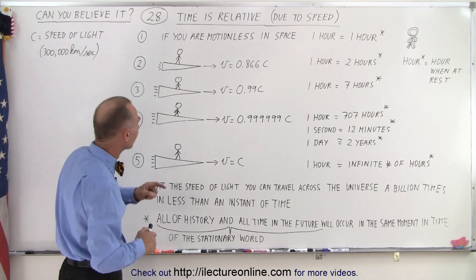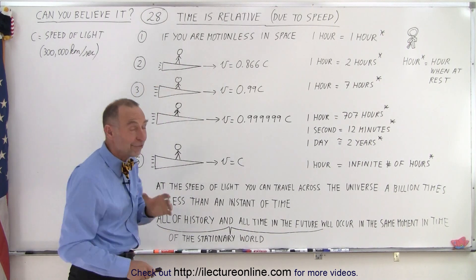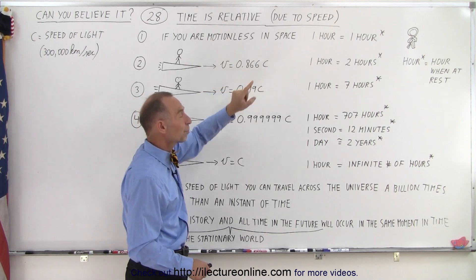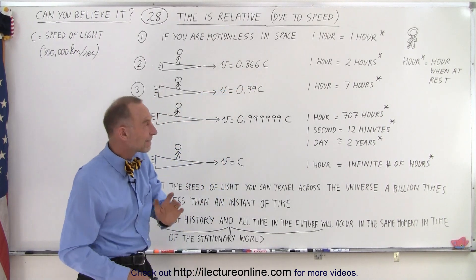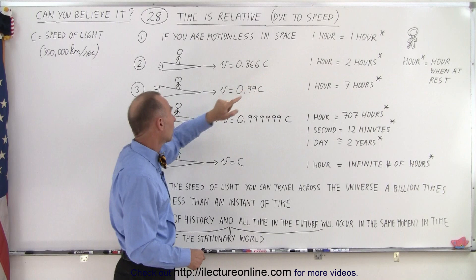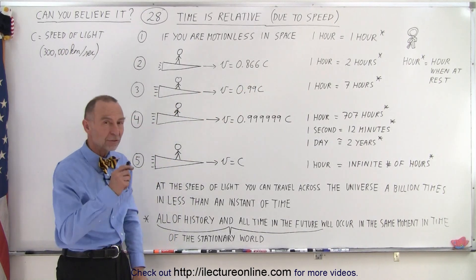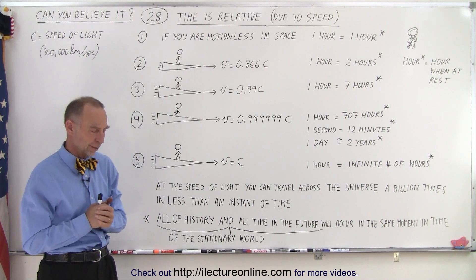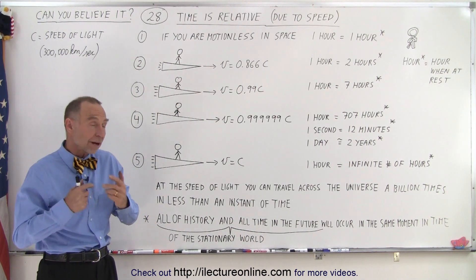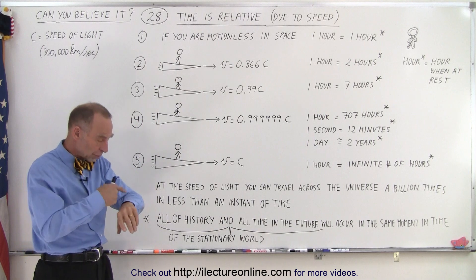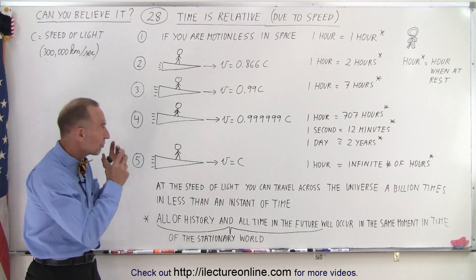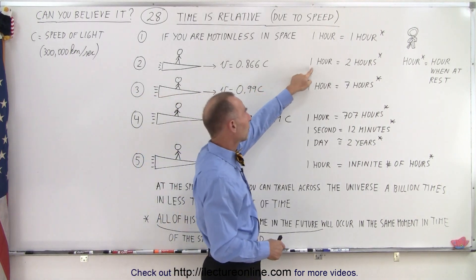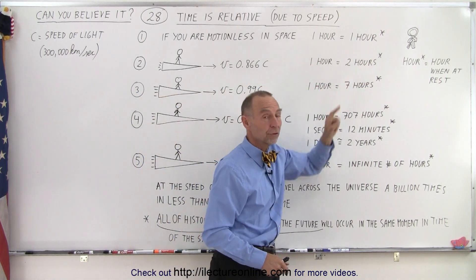But what if that person went on a spaceship, a pretty fast spaceship, that travels at 86.6% the speed of light, 0.866 times C, where C is the speed of light, which is 300,000 kilometers per second or 186,000 miles per second? Well, if you're traveling that fast and you look at your watch and one hour goes by, the time that you're experiencing on that spaceship in one hour is two hours for the person over there.